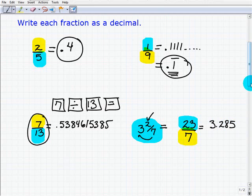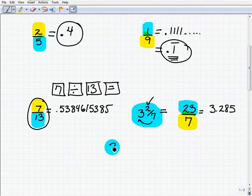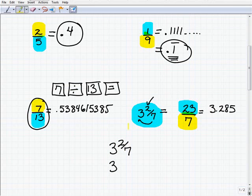Now, another way you could have done this is saying, okay, I have 3 and 2/7ths. You can write the 3 right here, and now let's just go ahead and change the 2/7ths part into a decimal. So that's going to be 3 point. Now take 2/7ths, 2 divided by 7, and you get .285. You can just write that right here, .28571, etc.